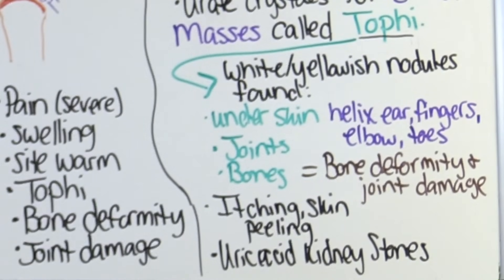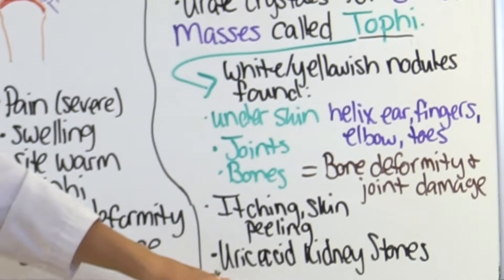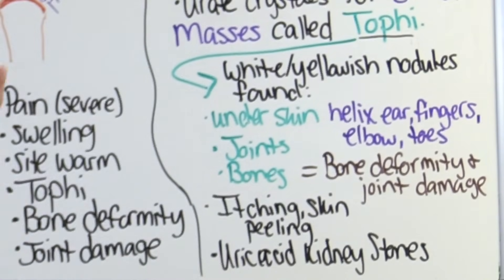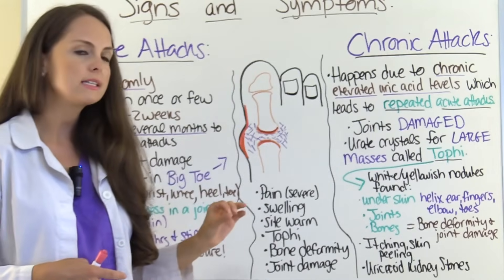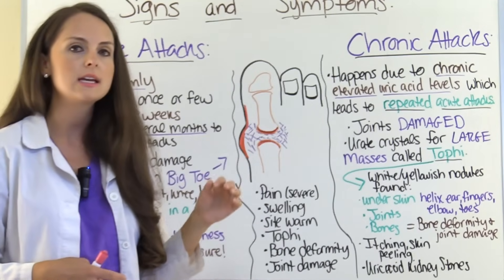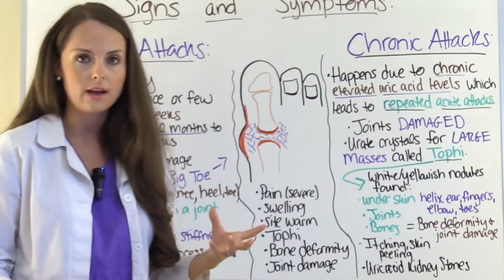The patient will also probably have itching — they can have itching in acute attacks as well, where that skin is really inflamed — and the skin can peel. And because of these constant high uric acid levels, the patient is at risk for uric acid kidney stones, which we discussed in great detail in the renal calculi video.